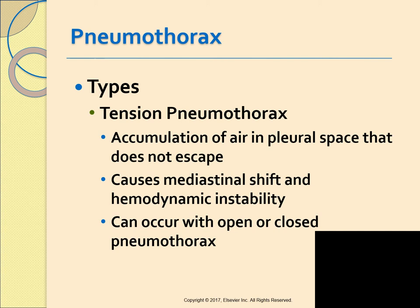This is a very important point because class questions often ask: the chest tube doesn't appear to be working — what do you do first? You look and make sure the patient isn't laying on the tube, check for kinks, and make sure the unit is hanging on the bed properly — not on the floor and not on the railing — similar to how a Foley catheter is managed.